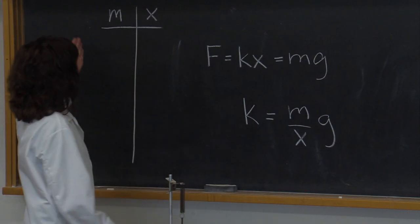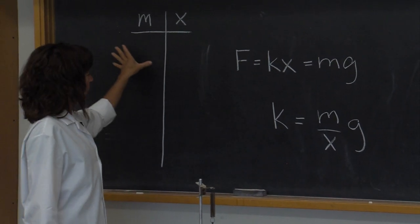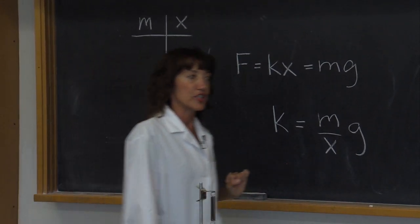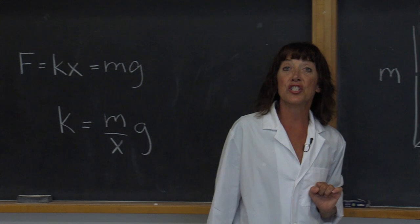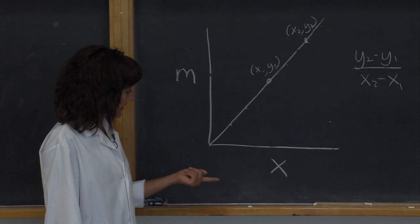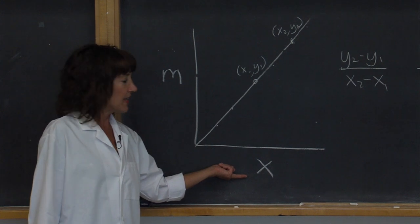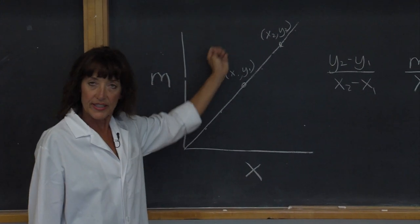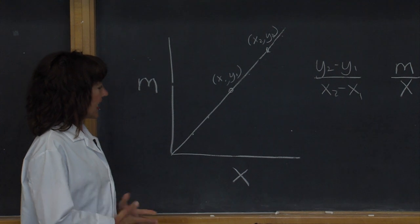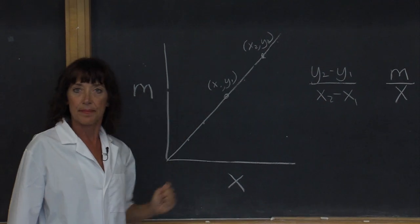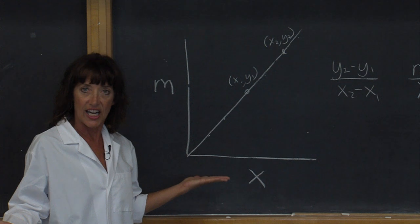Now I'll go back to my data table and I'll use this data to construct a chart. On my chart, I will plot the mass on the y-axis and the corresponding displacement on the x-axis. I will enter my data points and I will use these data points to get a best fit line. I want to have a constant slope, so do not connect the dots.